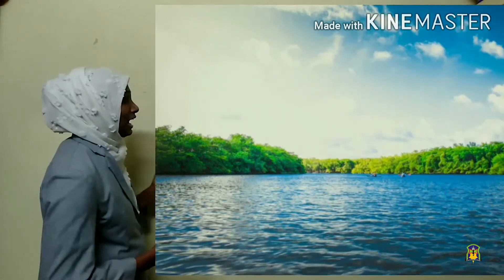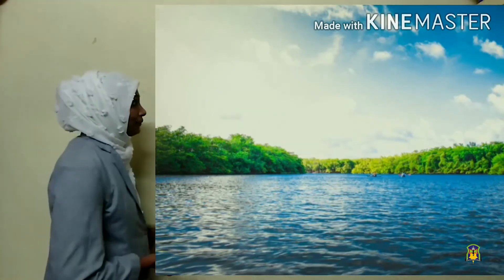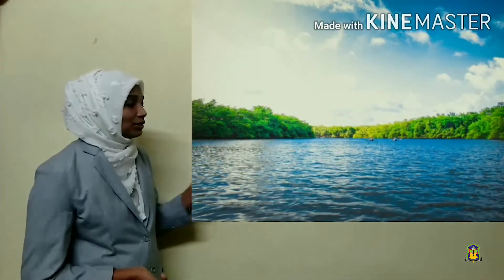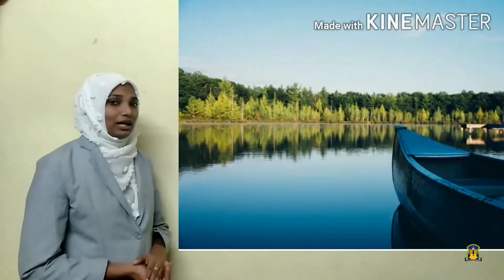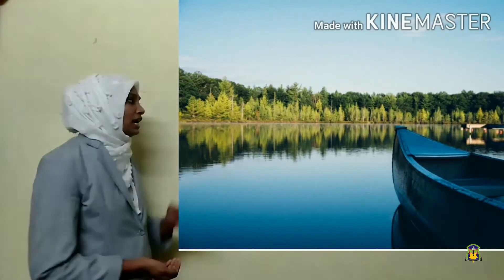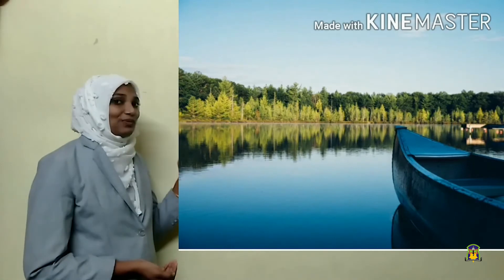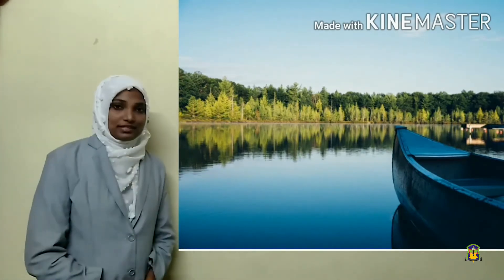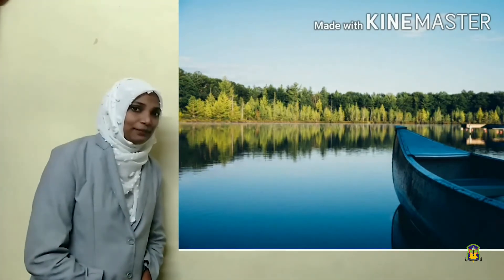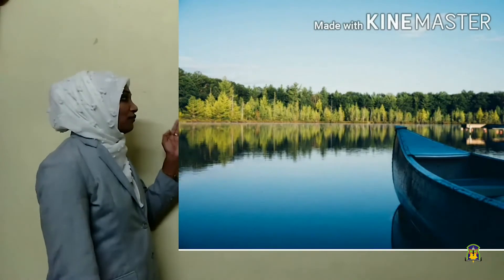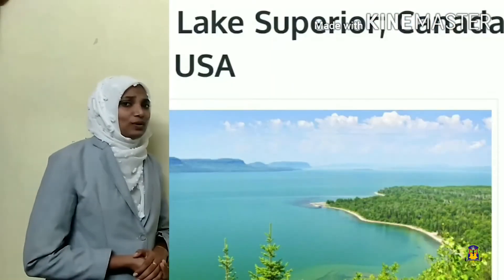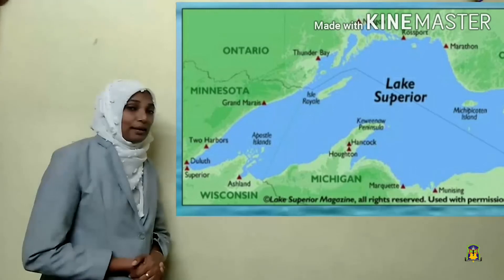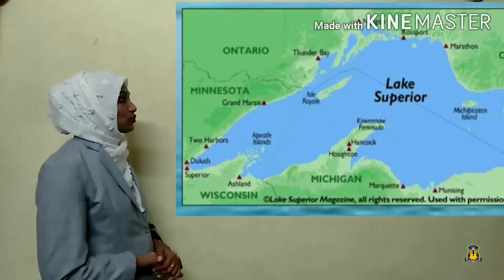Lakes are of two types: freshwater lakes and saltwater lakes. A freshwater lake contains water that is not salty. An example of a freshwater lake is Lake Superior in North America.